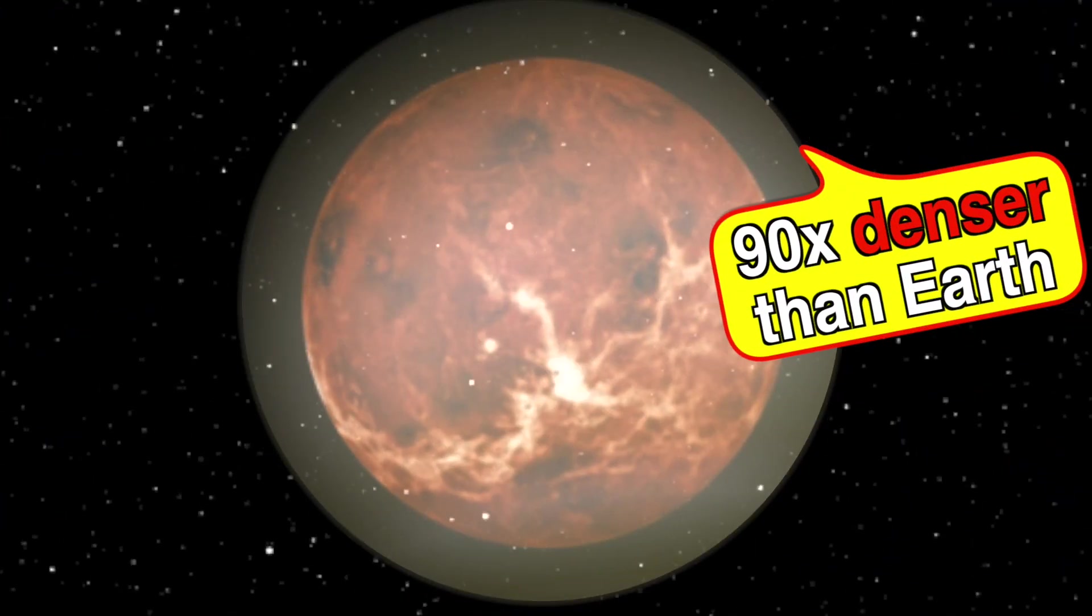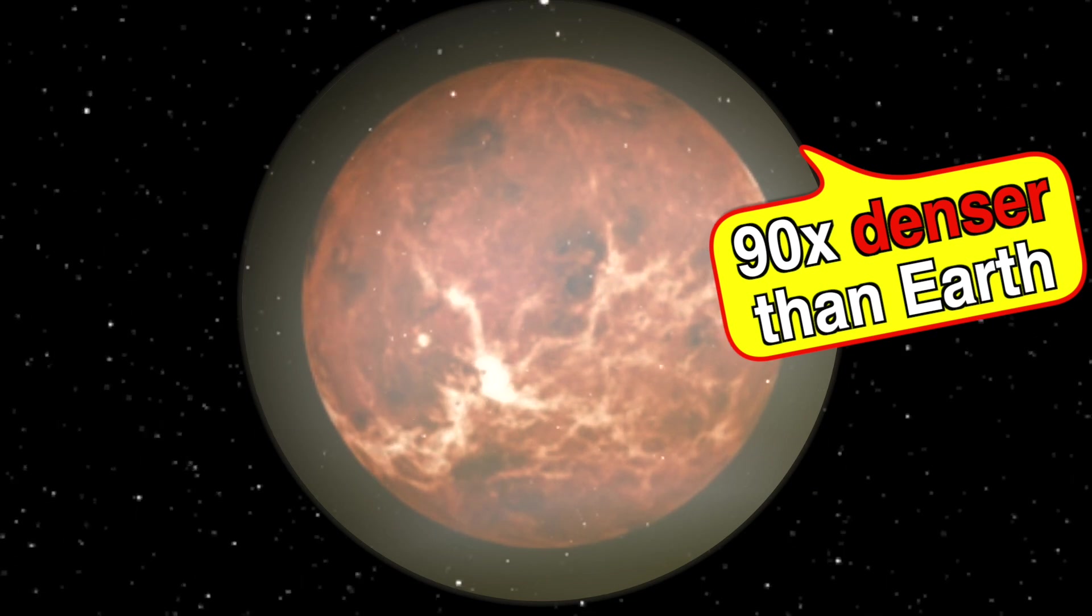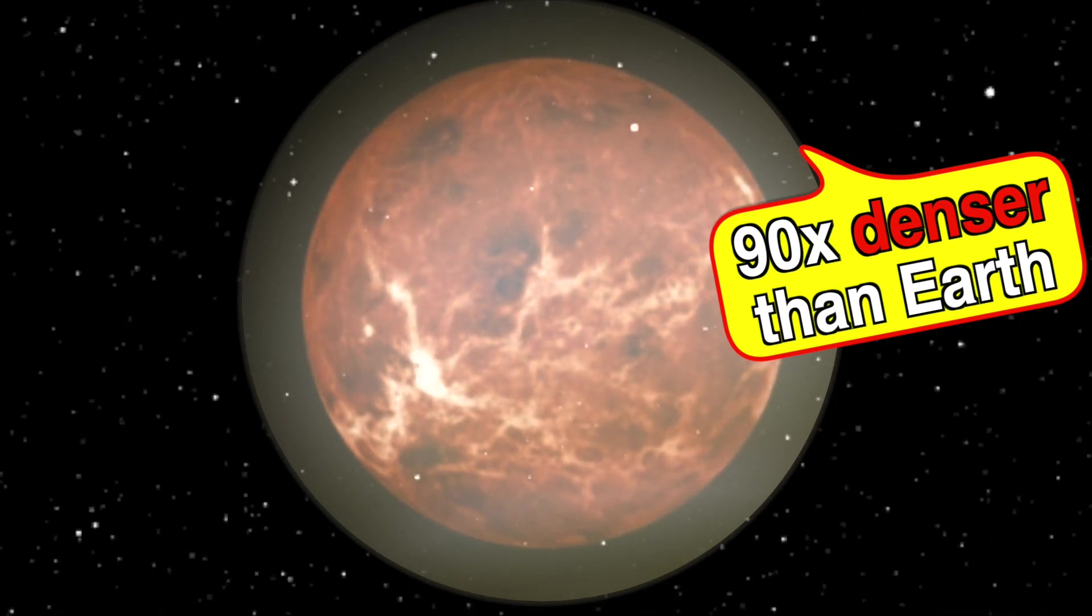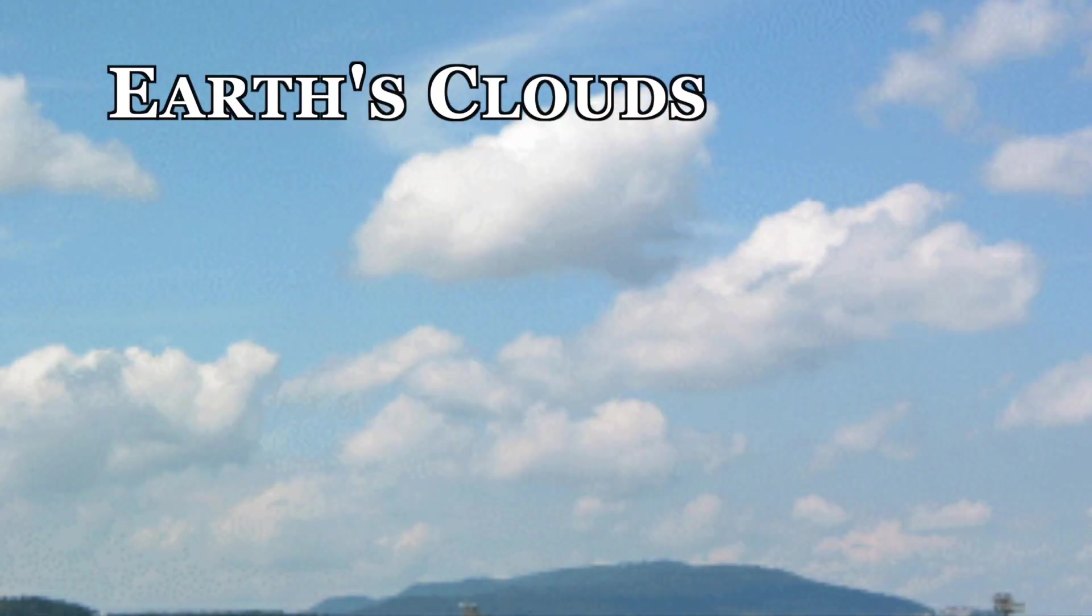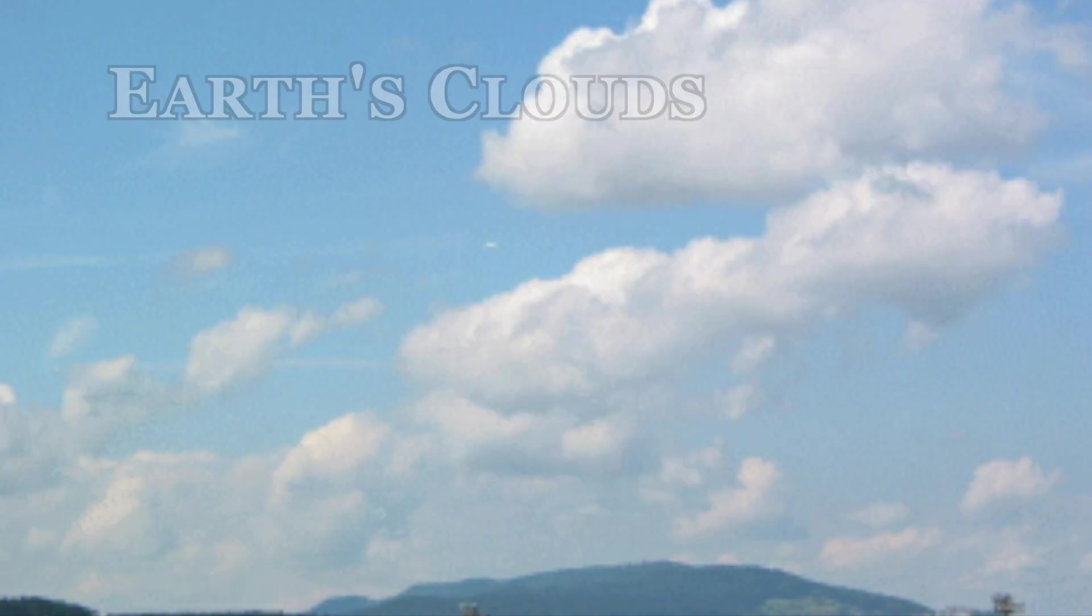As you know in my last video I explained the atmosphere of Venus is 90 times denser than the atmosphere on Earth. Our clouds come and go. They don't stay at the same place for a very long time. But in case of Venus the clouds are there forever.